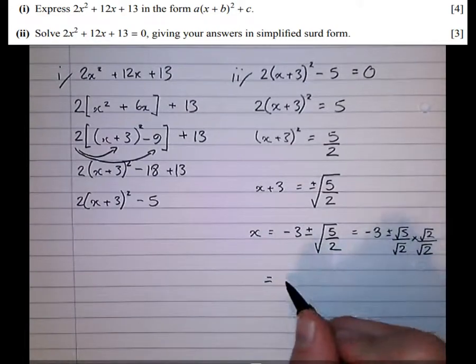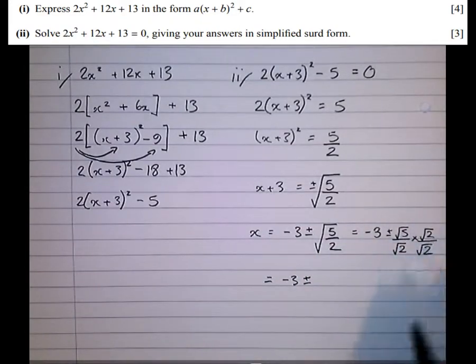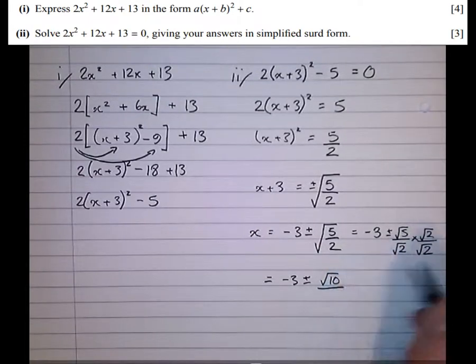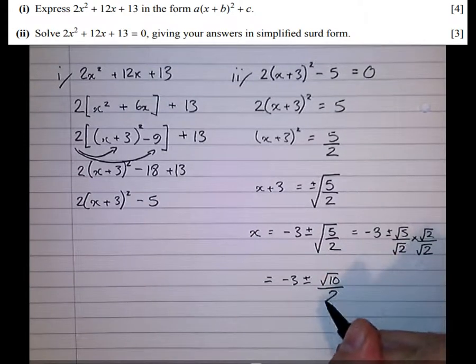And notice that we can rationalize the denominator by multiplying by √2/√2. It's then equal to -3 ± (√5 × √2 = √10) on the top. And on the bottom, √2 × √2 = 2.